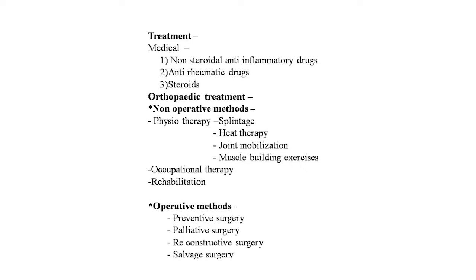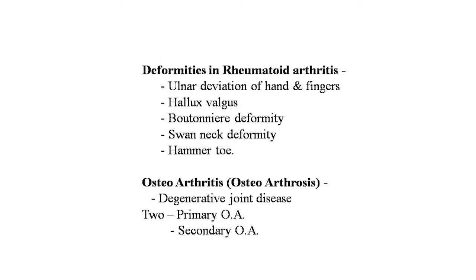Treatment of rheumatoid arthritis: medical treatment is the main approach, using NSAIDs, anti-inflammatory drugs, and steroids. Orthopedic non-operative methods include physiotherapy, splintage, heat therapy, joint mobilization, muscle-binding exercises, occupational therapy, and rehabilitation. Operative methods include preventive, palliative, reconstructive, and salvage surgeries. Deformities in RA include ulnar deviation of the hand and fingers, hallux valgus, boutonnière deformity, swan-neck deformity, and hammer toe.